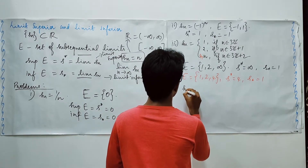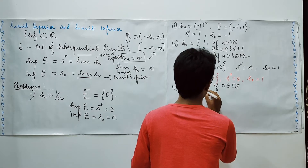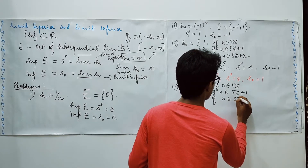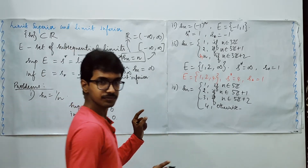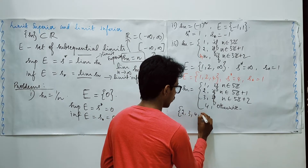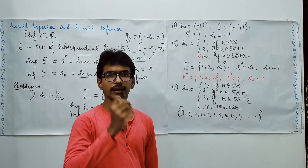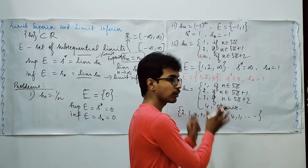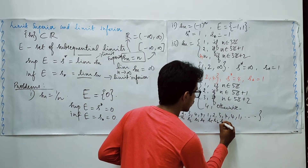Let me define: Sn = 1 if n is in {5k}, Sn = 2 if n is in {5k+1}, Sn = 3 if n is in {5k+2}, and Sn = 4 otherwise. The range of the sequence goes: 1, 2, 3, 4, 4, 1, 2, 3, 4, 4, 1, and it continues this way. So S1, S2, S3, S4, S5 are the respective values.